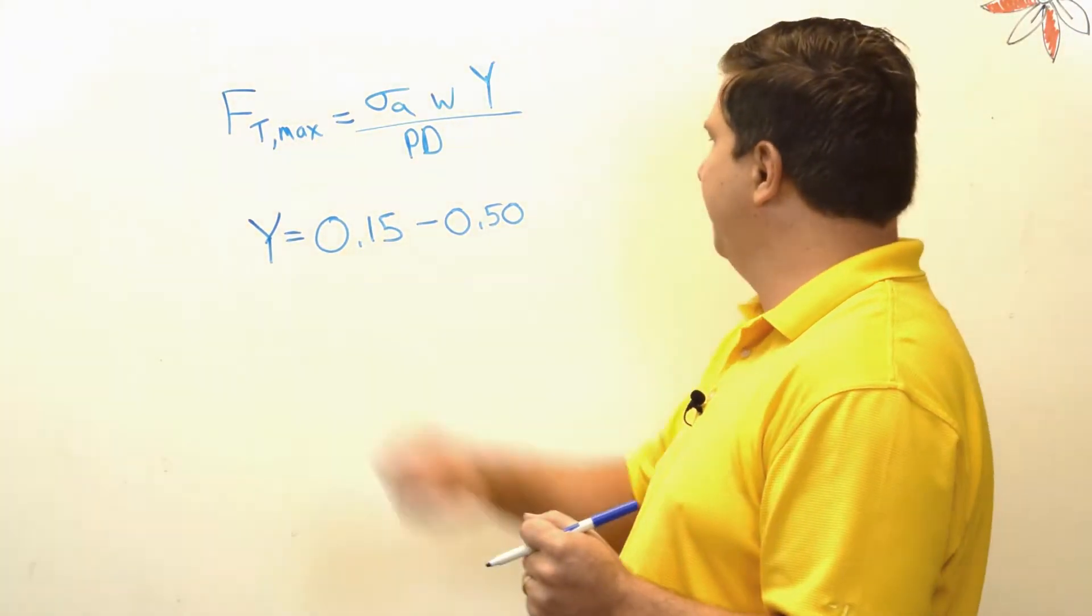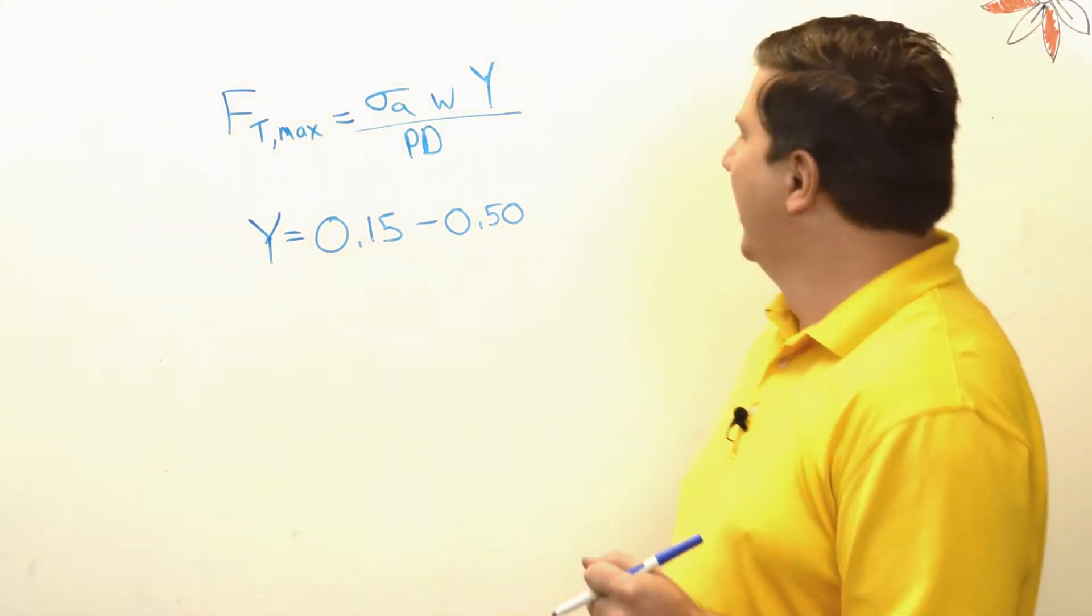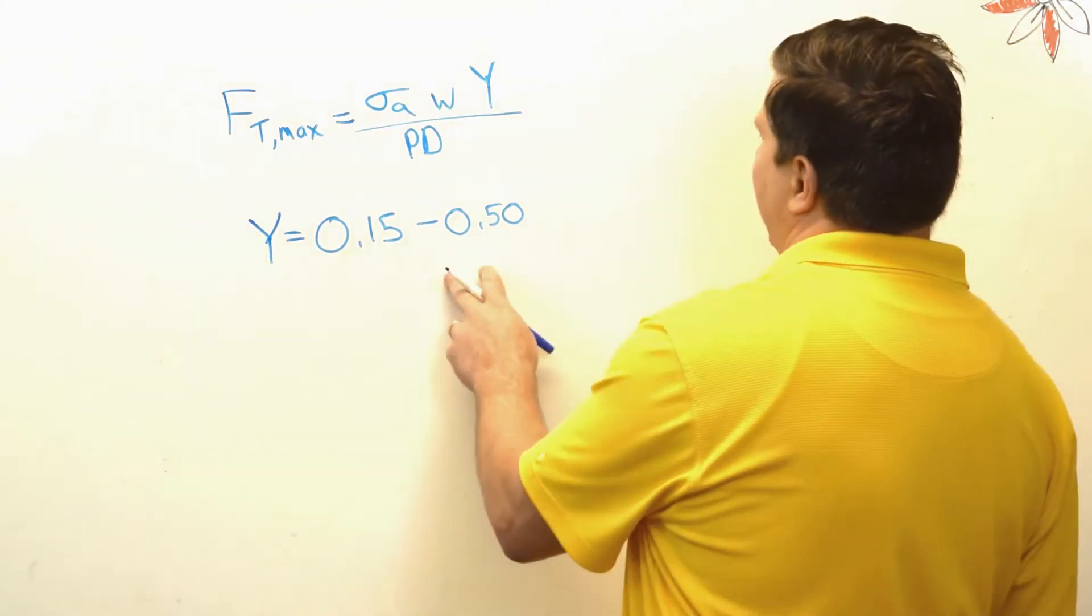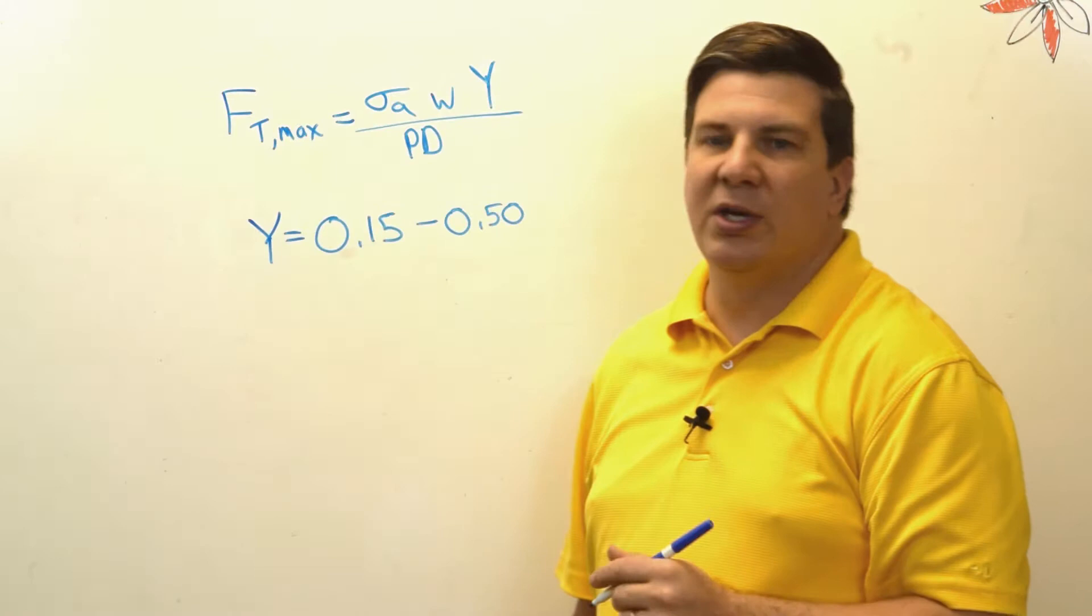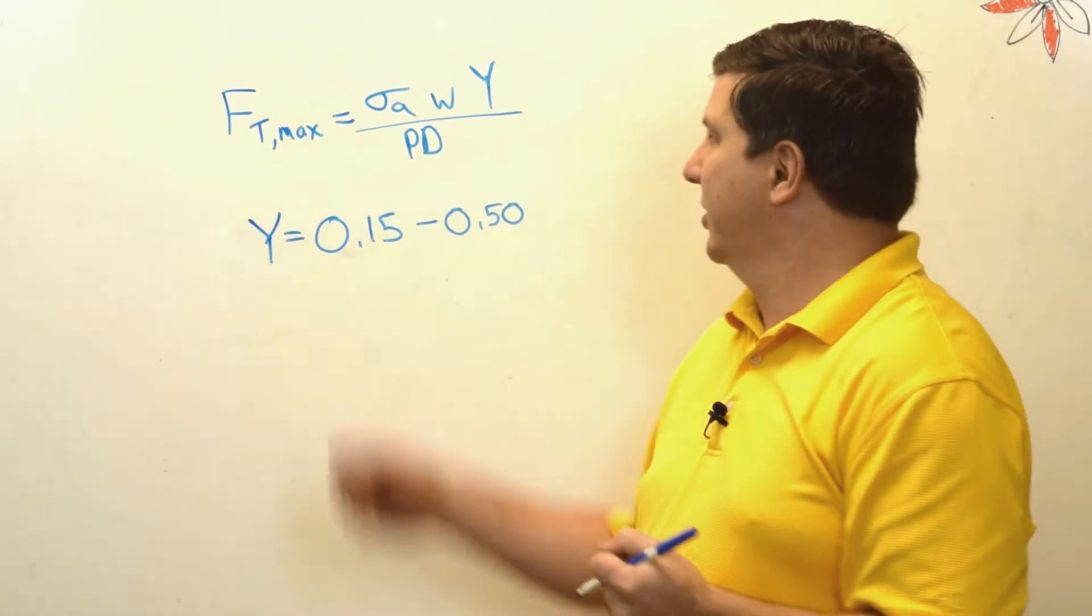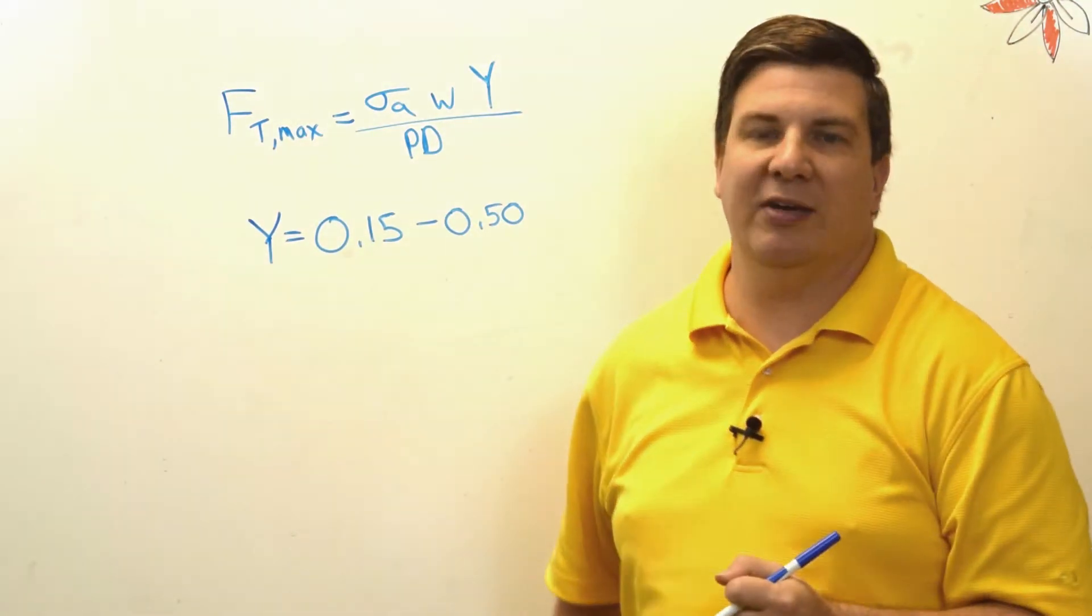So depending on those two things, that's what forms that. So a rack gear is going to be closer to the 0.5 number, and a very small pinion gear is going to be closer to the 0.15.